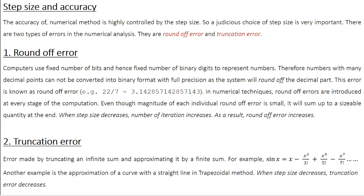Another example of truncation error is the trapezoidal method. In the trapezoidal method, you divide the entire integration range into a number of subintervals, and in each subinterval you approximate the curve using a straight line. If you recollect the expression for the polynomial y, it is an nth degree polynomial, but in the trapezoidal method you are taking a straight line, which is a first degree polynomial. So you are terminating the nth degree polynomial after the first term, and this truncation results in truncation error. In the trapezoidal method, when step size decreases, the approximation gets better because the truncation error decreases.